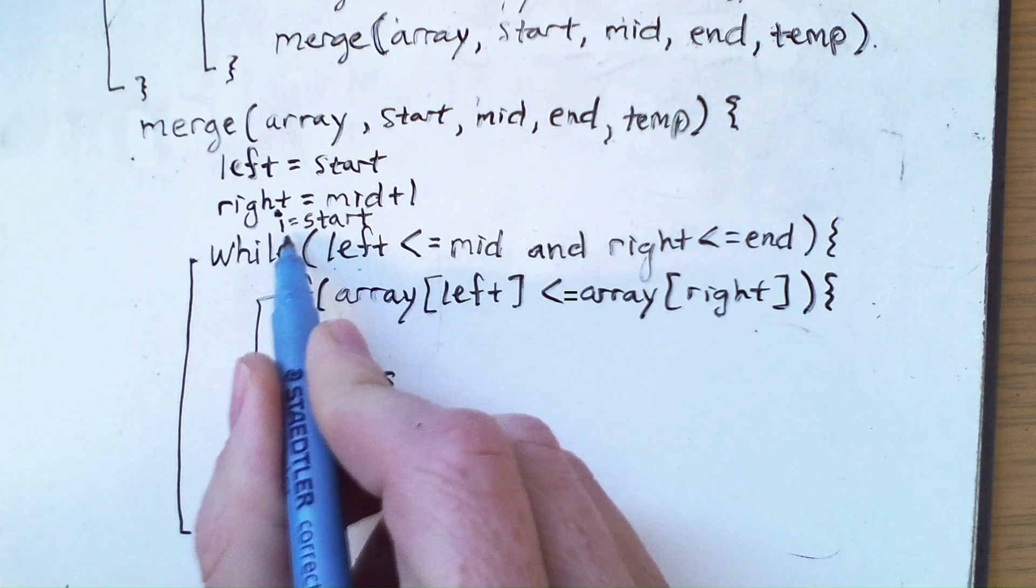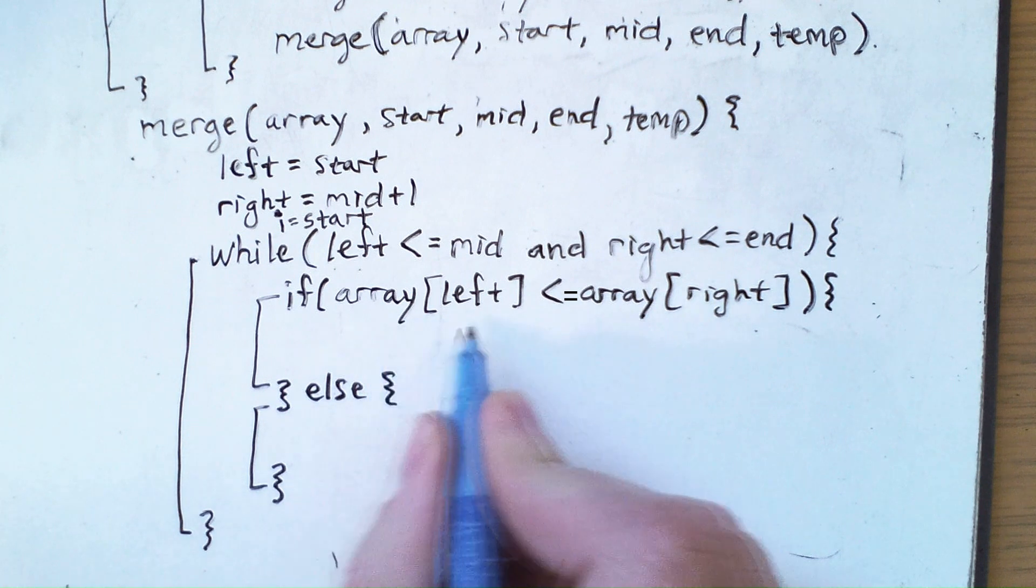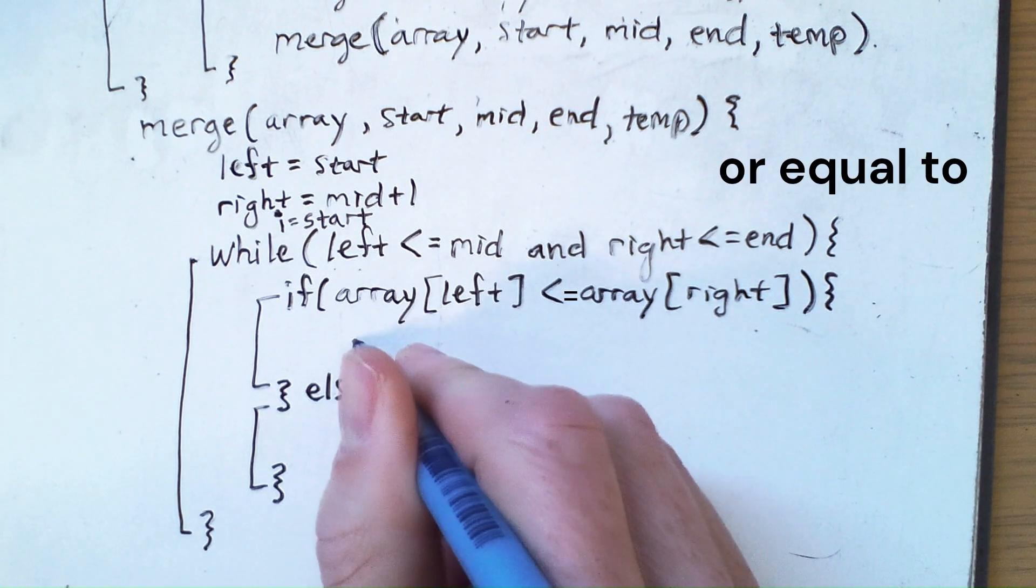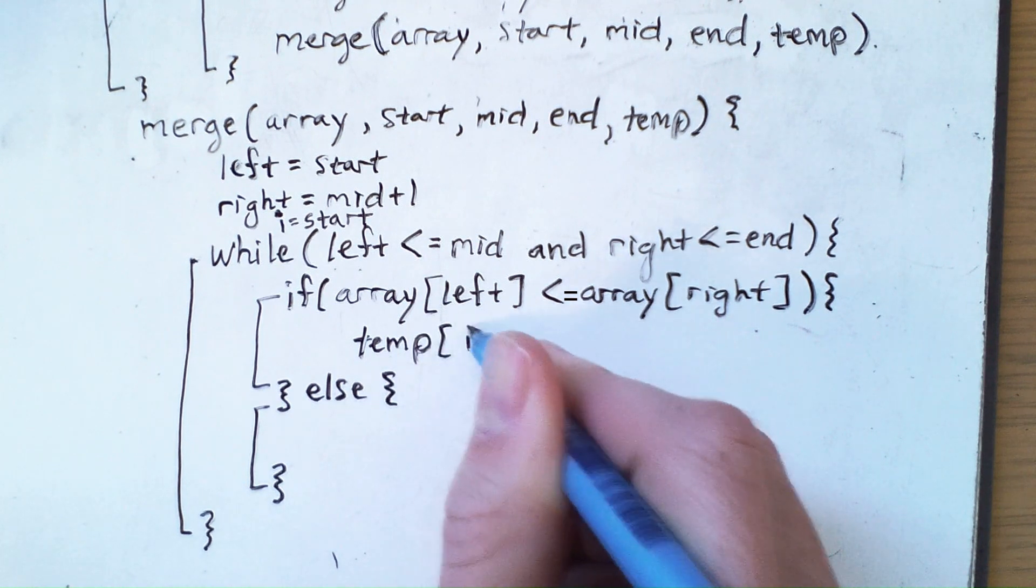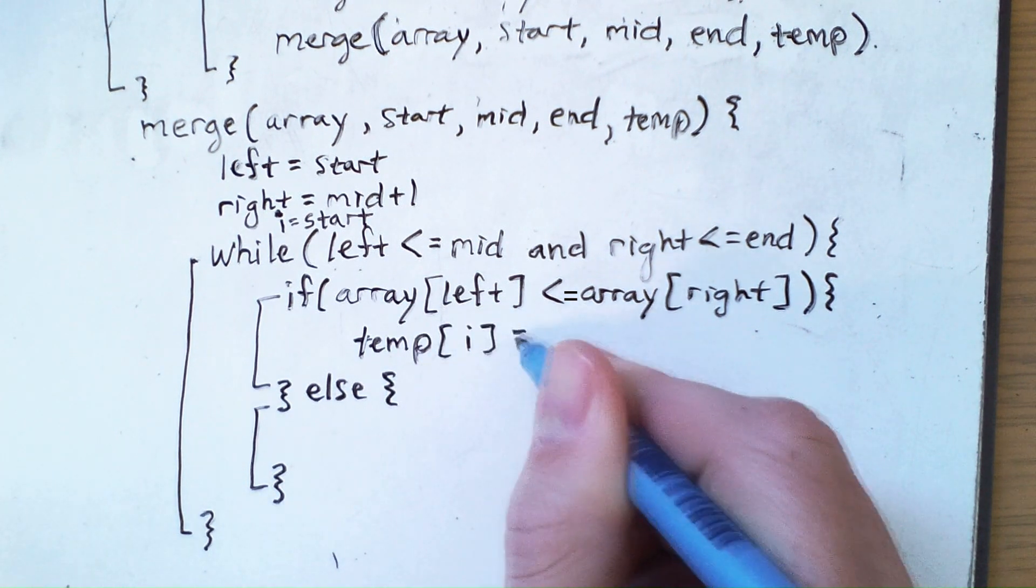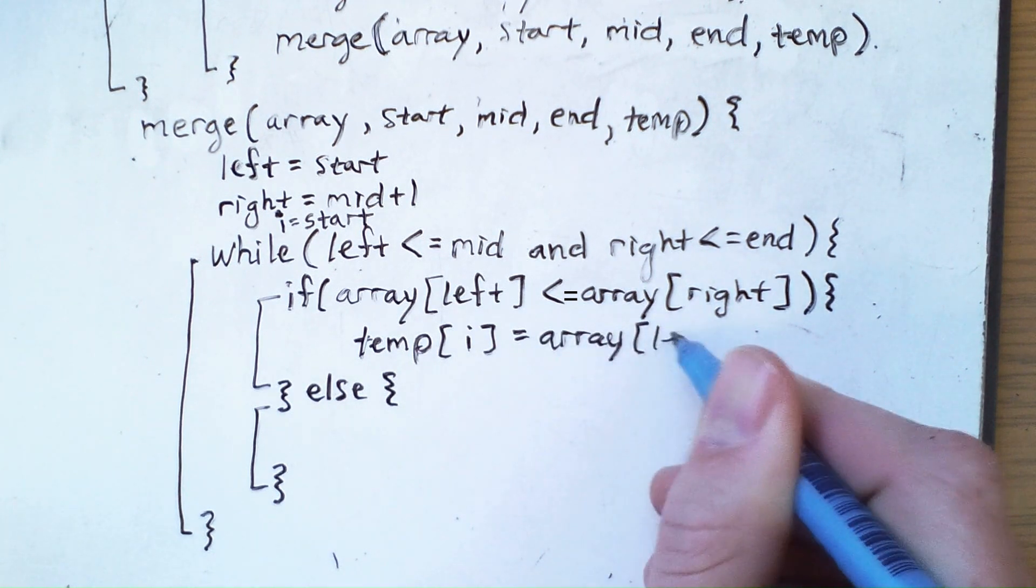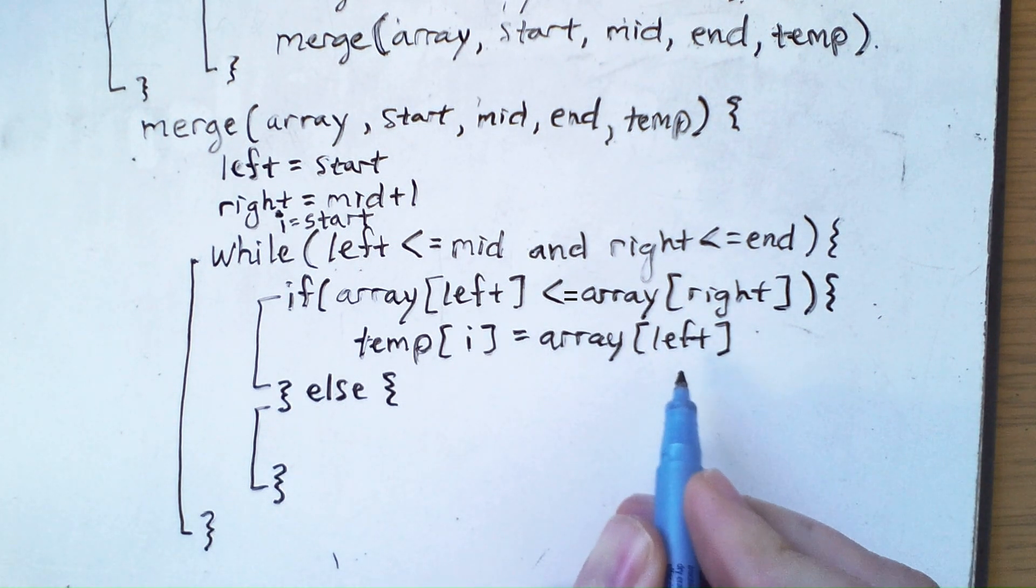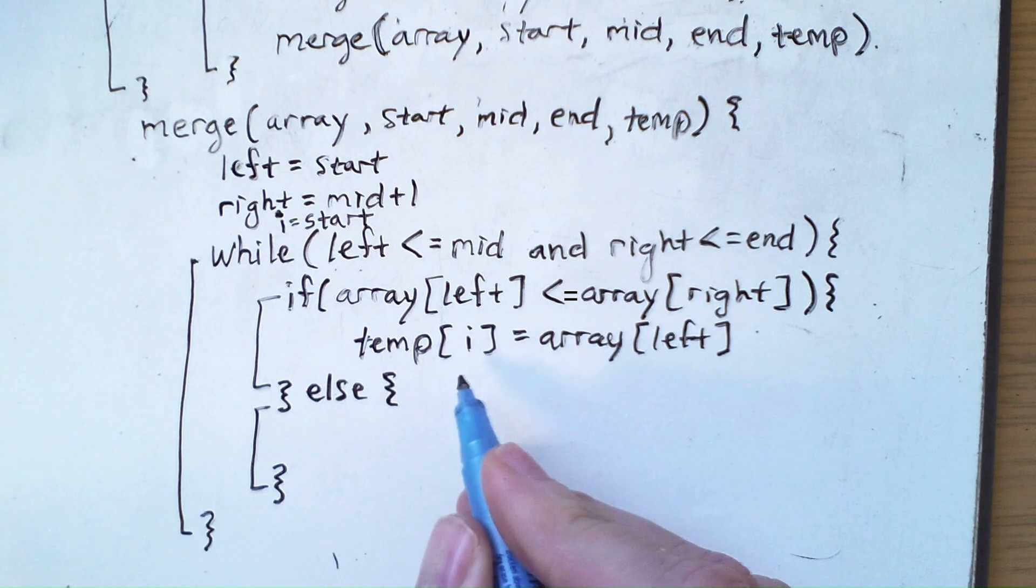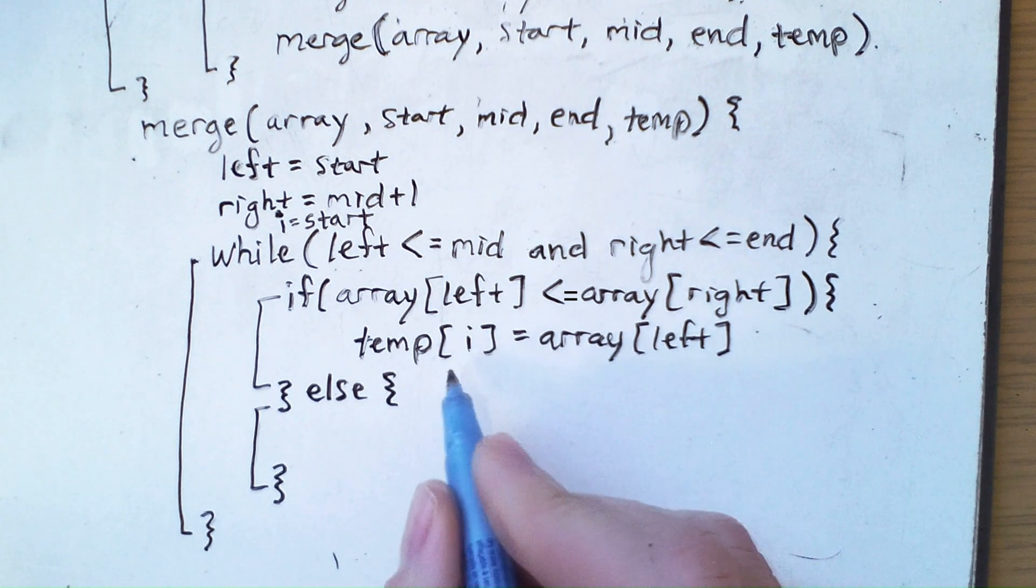So i will be initialized to start the same way that left is. But when we find that the left element's less than the right element, we will say that temp[i] is equal to array[left]. Now, because left was the smaller one and we use that value, that means left has to increase. So I'm actually going to increment left. And I also have to increment i.